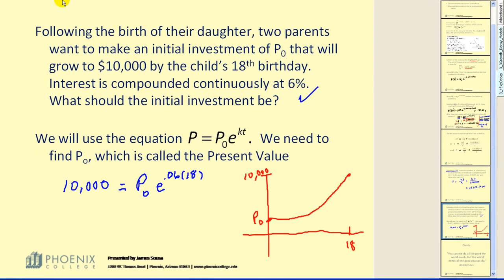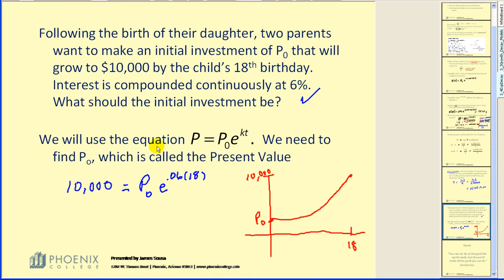Okay, so if we go back over to the problem now and try to solve this for P₀, we first need to evaluate e raised to this power. I've already found the value of e raised to the power of 0.06 times 18, and that comes out to 2.9447.